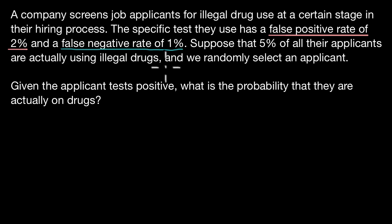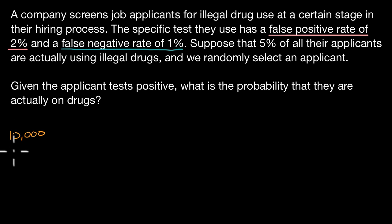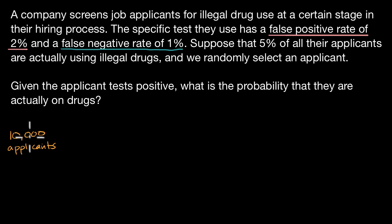There are several ways we can think about this. One of the easiest ways to conceptualize it is to just make up a large number of applicants, using a number where it's fairly straightforward to do the mathematics. So let's say that we start off with 10,000 applicants — this is also going to represent 100 percent of the applicants. I chose this number because it's easy to do the math.